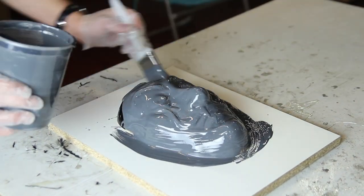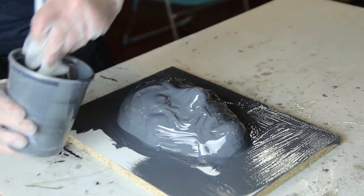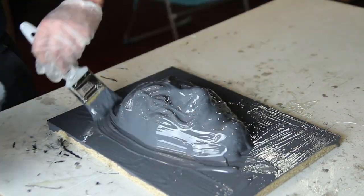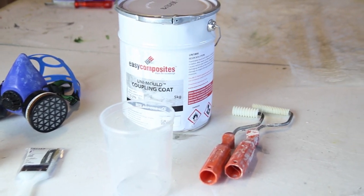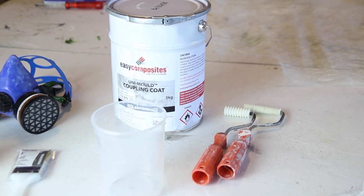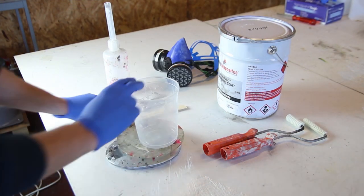So here I'm just using the gel coat, so it's mixed with one percent I think MEKP hardener, depends on the temperature and the quickness that you will be applying it. Then you just wait for it to go tacky and then you can proceed with the next step.